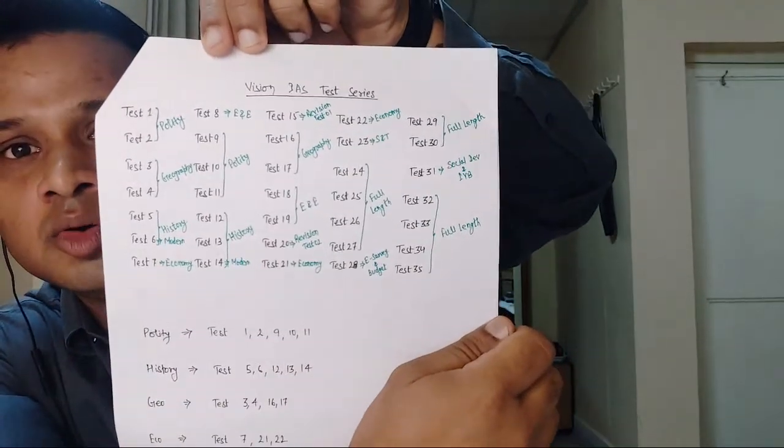The first thing is a to-do list. Then align your test series schedule according to your sources. For example, in Vision IAS there are around 21–22 thematic tests. Looking at the test plan: Test 1 and 2 cover Polity, Tests 3 and 4 are Geography, Tests 9–11 are again Polity, Tests 12–14 are History, and the last tests are full-length. There is also an Economic Survey test. Create a list and add a schedule accordingly.